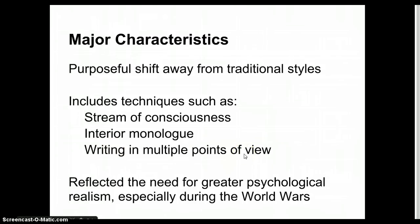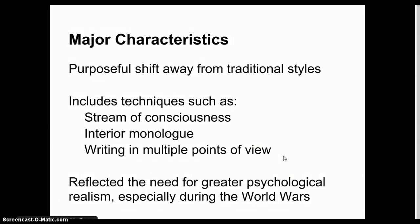There's also writing in multiple points of view. If you're with me sophomore year, we read the Poisonwood Bible, which is told from the point of view of five different people. So that got really started during the modernist time period. And this modern literature reflected the need for greater psychological realism, especially during the World Wars. Literature is how people cope with life, and so this modernist literature reflected this anxiety inside of the common man as we sort of had no control over the World Wars and over the decisions that the government was making.